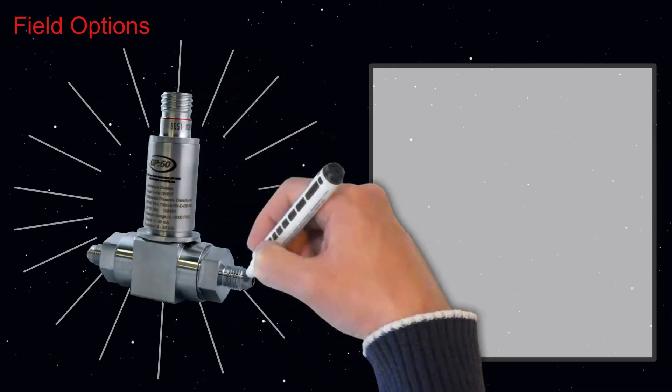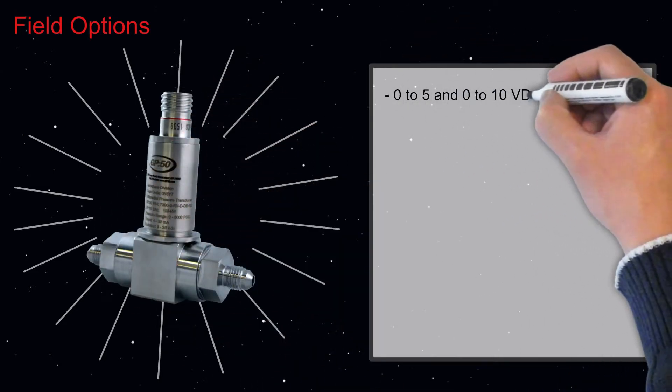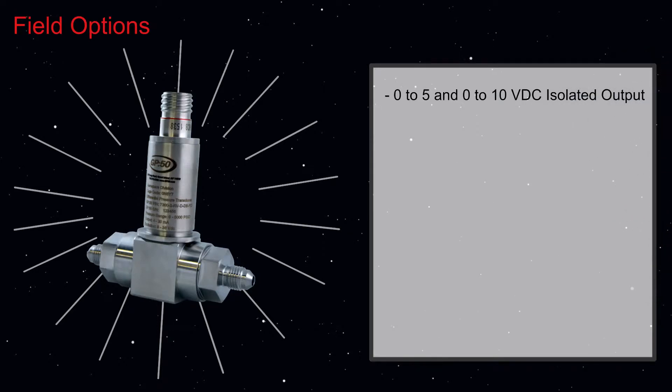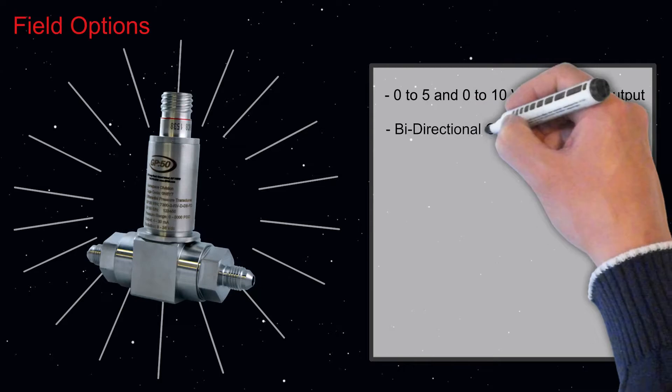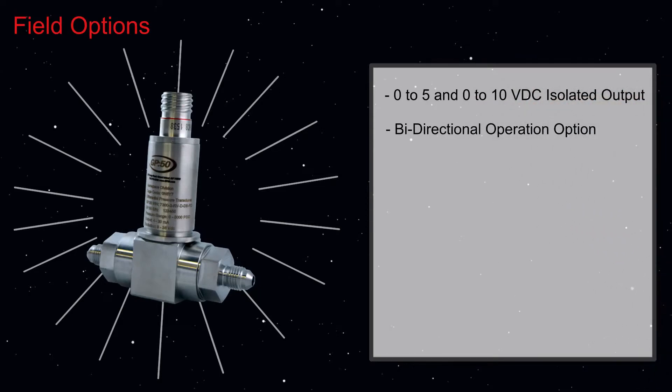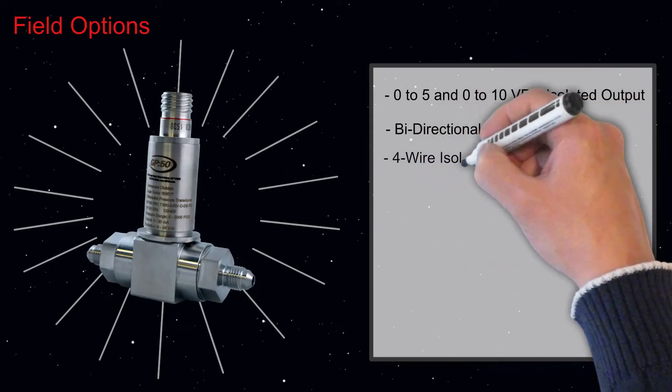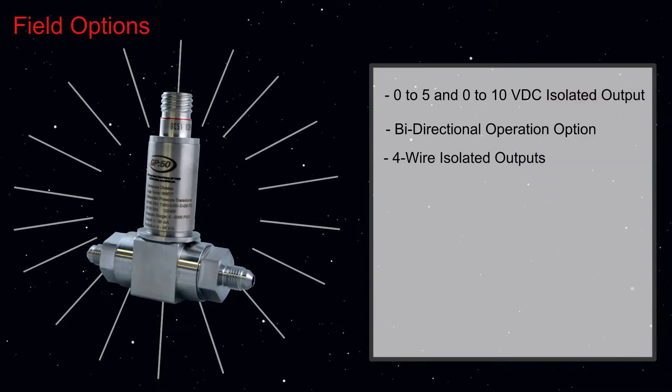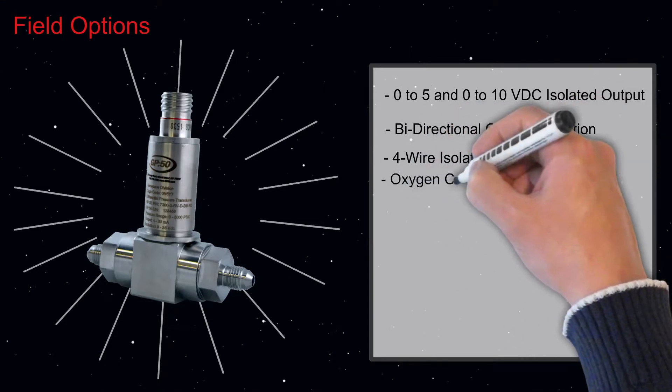Field options for this series include 0 to 5 VDC and 0 to 10 VDC isolated output, a bi-directional operation option, 4-wire isolated outputs, and oxygen compatible designs.